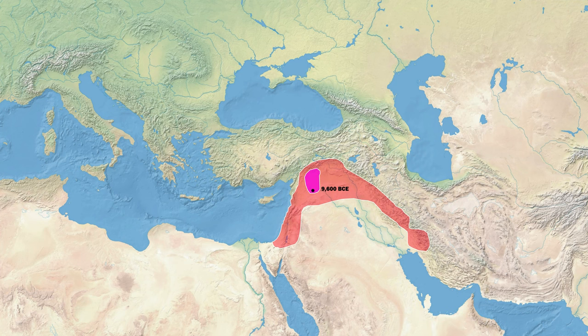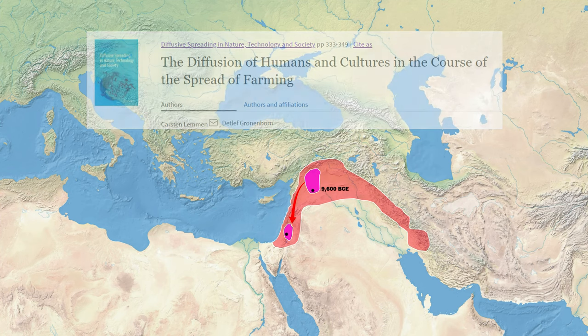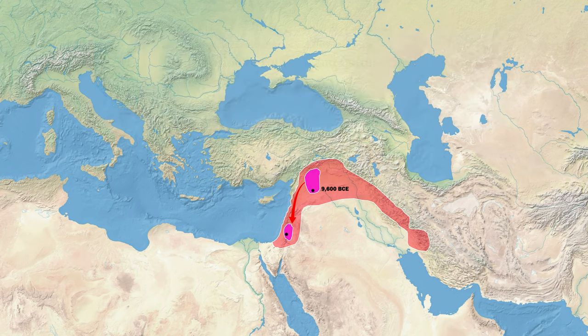At the same time, traces of agriculture are also found at the site of Jericho in the Palestinian West Bank. According to Karsten Lemmon's research into the spread of agriculture from the Fertile Crescent, the diffusion of agriculture into Europe had two routes: one through Anatolia and the Balkans, and the other through Cyprus and Crete.